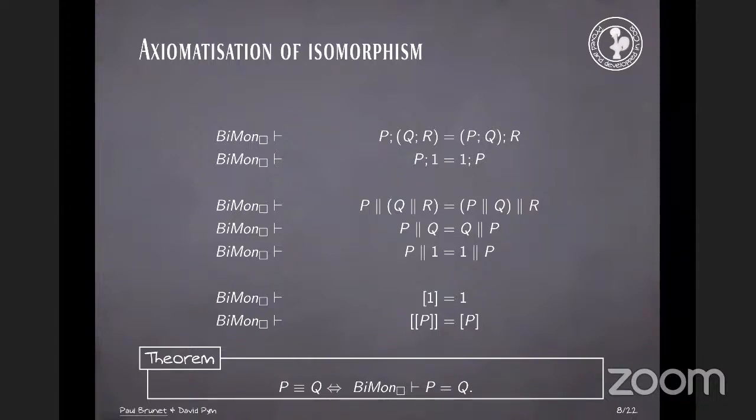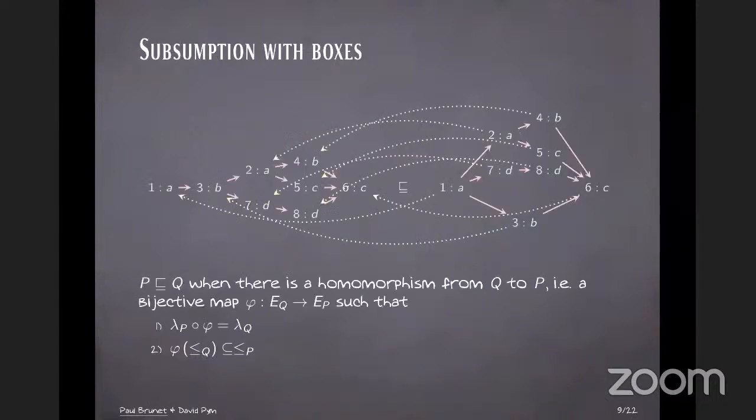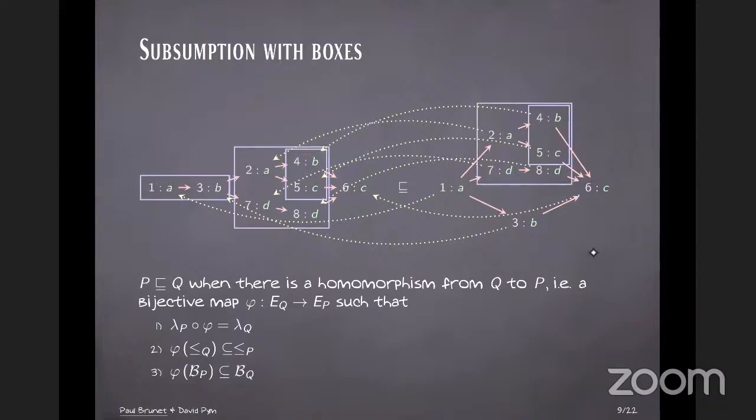We can also generalize subsumption, which is the way to get interleaving in CKA. So here, this is the definition of subsumption with boxes, and so the definition is you need to have a bijective map from the big one to the small one that preserves the labeling and the order. And so here, when we have boxes, we also have to preserve boxes. But we allow more boxes to be in the small Pomset, meaning the intuition here is that drawing a box around the Pomset restricts behavior. So it's smaller.